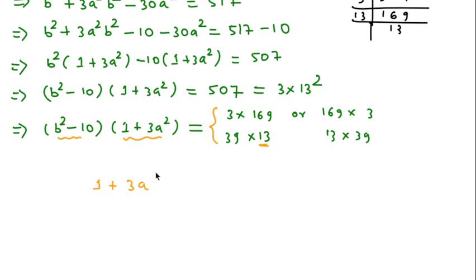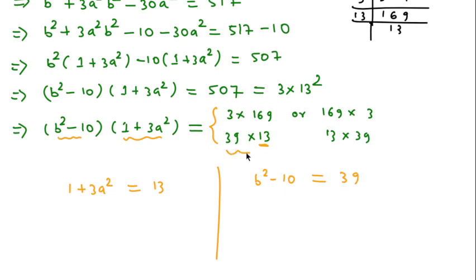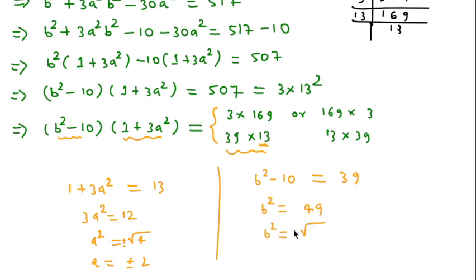The only possible value is a = 2, since 1 + 3(4) = 13. So (1 + 3a²) = 13, which means (b² − 10) = 39. Therefore 3a² = 12, so a² = 4, giving a = ±2. And b² = 49, giving b = ±7.